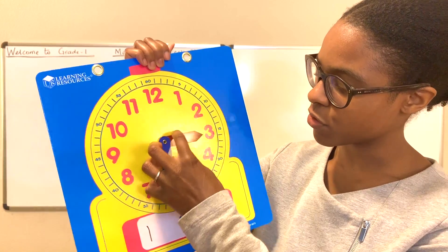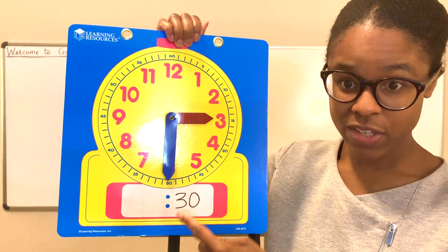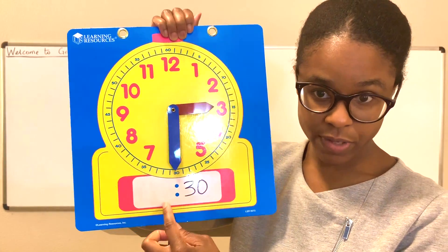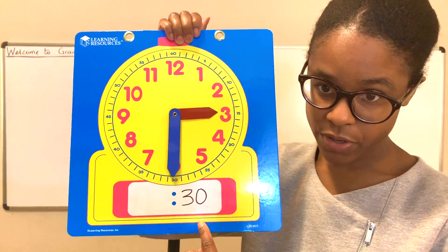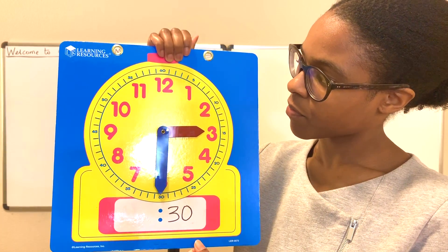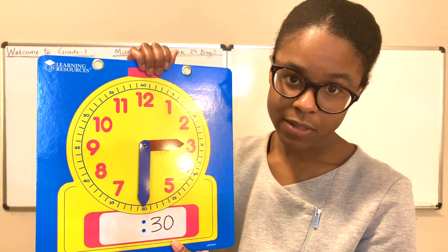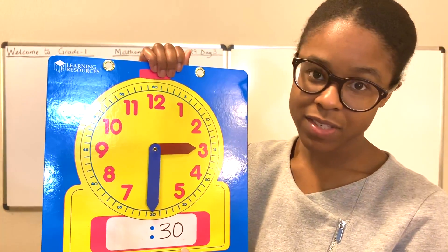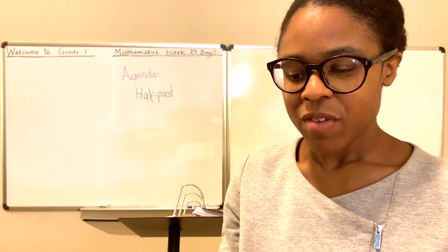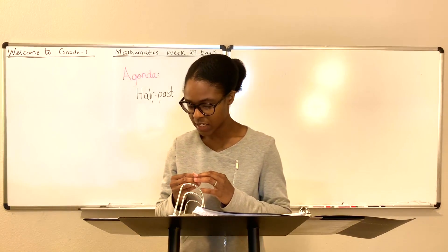So if I move this hand here to three, what time would this be? 3:30. Exactly — or we could say half past three. I don't have my pen to show the digital time, but that would be 3:30. It's halfway past three o'clock, and it's halfway because there are 60 minutes in an hour and half of 60 is 30. Half past. I trust you understand what half past is with that demonstration.